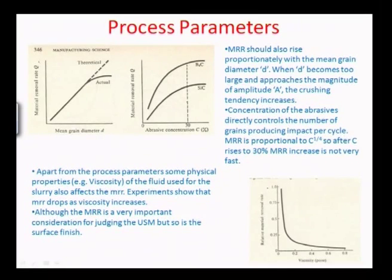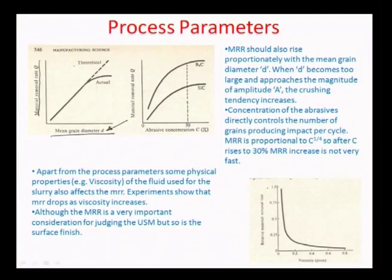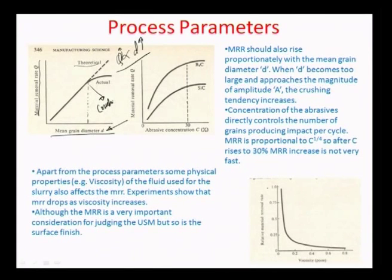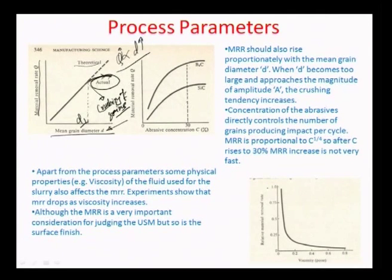Another aspect: how MRR varies with mean grain diameter. As grain diameter increases, MRR theoretically increases proportionally since Q is proportional to mean grain diameter d. However, grain crushing again is important: if the grain is too large in diameter, there is a tendency for the tool to crush the grains. The moment crushing happens, MRR goes down — so the actual MRR for a grain diameter greater than a critical diameter d1 starts coming down rather than following the theoretical trend.